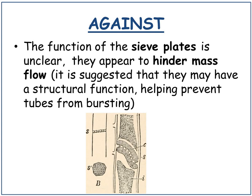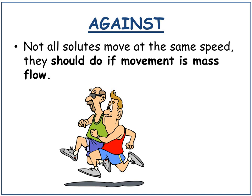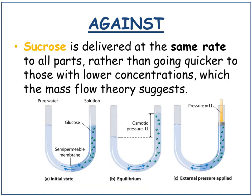One piece of evidence against is that the function of sieve plates is unclear — they actually appear to hinder mass flow, though it has been suggested they may have a structural function helping prevent tubes from bursting. Not all solutes move at the same speed, whereas if it were mass flow they should. Furthermore, sucrose is delivered at the same rate to all parts rather than going quicker to those with lower concentrations, as the mass flow theory would suggest.